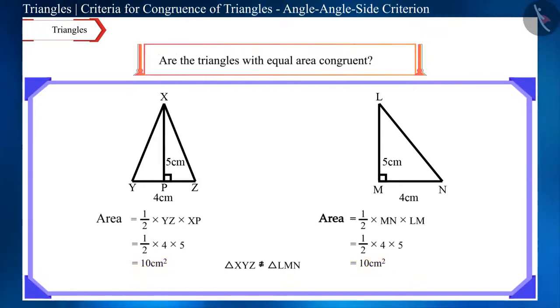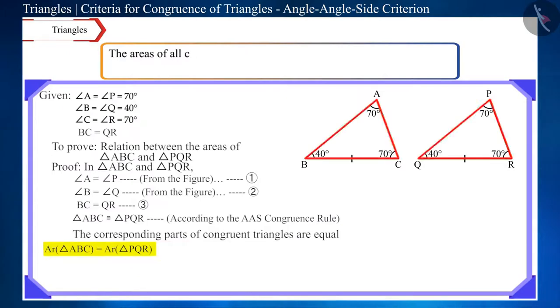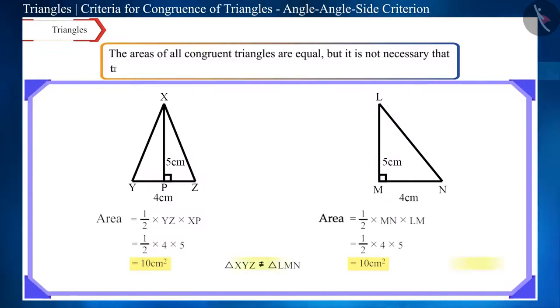From this, we can conclude that the areas of all congruent triangles are equal, but it is not necessary that the triangles that have equal area will be congruent.